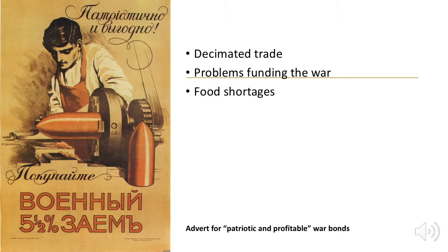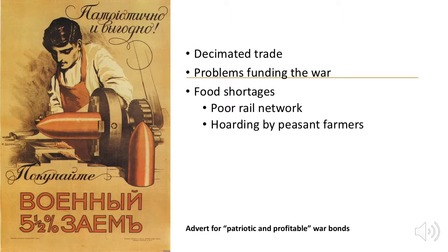Russia also had food shortages because of the poor rail network, which meant that food couldn't be distributed to the towns and cities and couldn't keep up with the demands of supplying the front. Peasant farmers had no incentive to sell what they produced, since there were no consumer goods for them to buy and no need for cash, so they stored and hoarded it. There was also inflation created by the government printing money to pay for the war, which decreased the real value of money while prices increased. Between 1914 and 1916, the cost of meat increased by 232% and the average price of food by 90%.